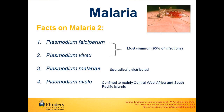Plasmodium ovale is mainly confined to selected locations such as central West Africa and the South Pacific Islands. There is also a rare fifth species of malaria that infects certain species of monkeys, but is starting to infect humans in small numbers. This species is known as Plasmodium nilesi.